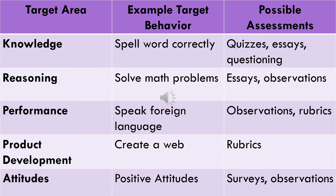There are many areas to assess for learning targets, such as performance, product development, and many more. For example, in the knowledge area, the behavior is to spell words correctly, and possible assessments include quizzes, essays, or questioning. For the performance area, the behavior is to speak a foreign language, and the assessment uses observations with rubrics. The target areas include knowledge, reasoning, performance, product development, and attitudes.